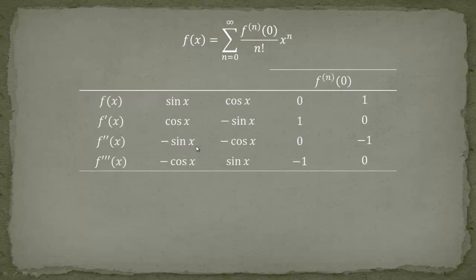Now you might ask why we are only calculating three derivatives. This is easy — if we differentiate minus cosine of x, we get minus minus sine of x, which is just sine of x again. The cycle just repeats itself, and if we differentiate sine of x, we are back at cosine. So it's enough to have these terms; we don't need more. There is some kind of periodicity in their derivatives.